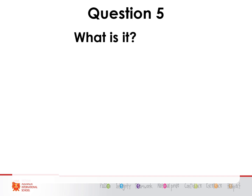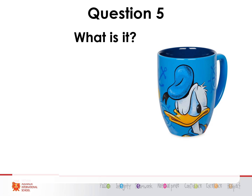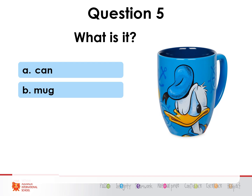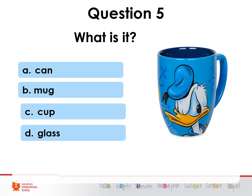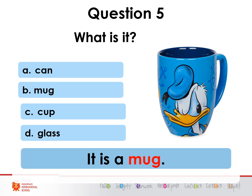Question five — what is it? A) a can, B) a mug, C) a cup, D) a glass. What do you think? Three seconds: three, two, one. That's right, it is a mug. A mug — it's a bit bigger than a cup. It's a mug.